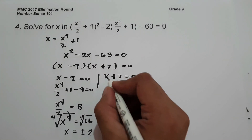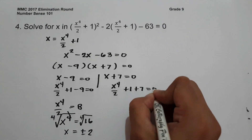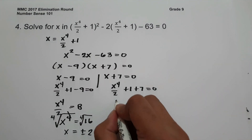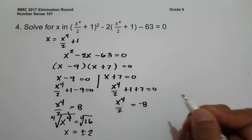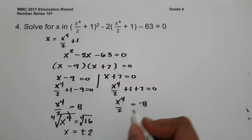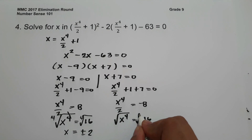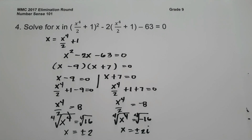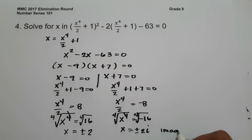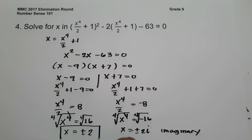For the other factor, x raised to 4 over 2 plus 1 plus 7 equals 0. Adding 1 plus 7 gives 8, which moves to the other side as negative 8. Multiplying by 2 gives x raised to 4 equals negative 16. Taking the fourth root of negative 16 gives positive and negative 2i, which is an imaginary number. Therefore, the real values of x are positive and negative 2.